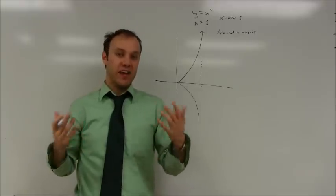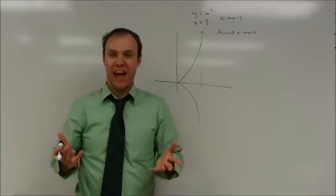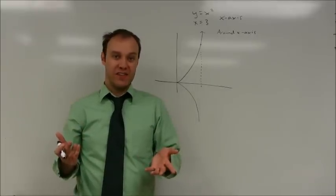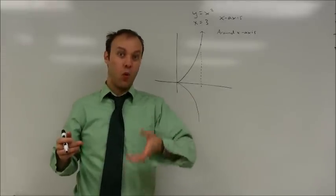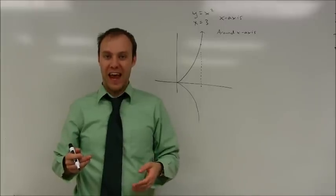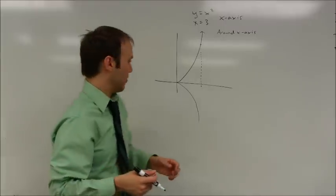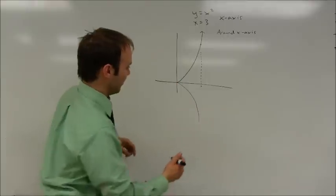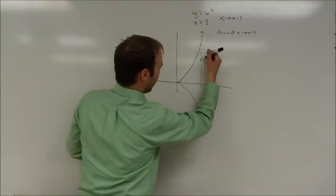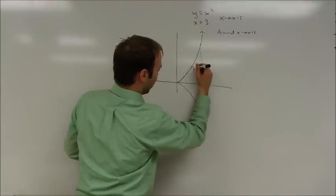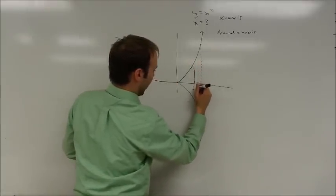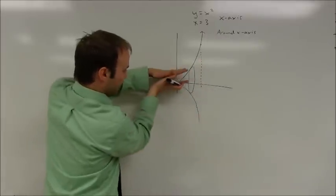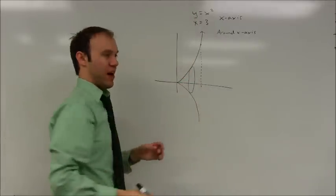I'm going to use the method I normally refer to as the disk method, which is basically to take different disks - which actually look like a quarter or something like that - and stack them on top of each other. So you have little tiny disks here, and you're getting bigger and bigger disks. The whole thing looks roundish and is kind of a horn-shaped graph.